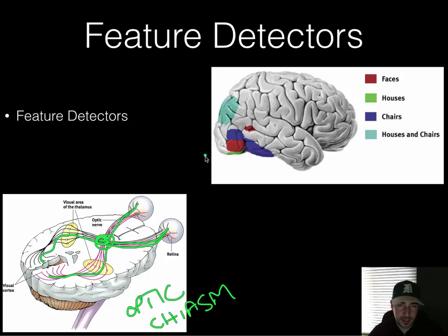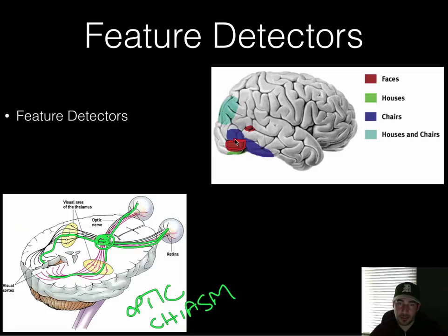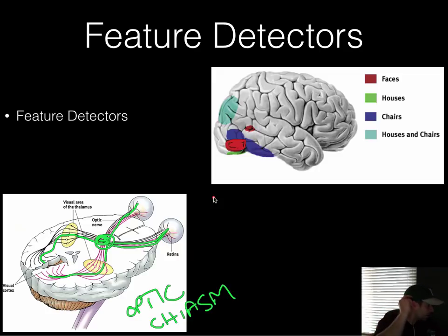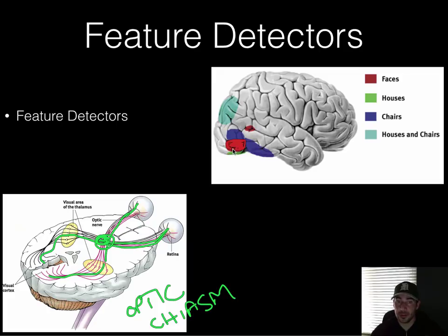We also have feature detectors — specialized parts of our brain for detecting different things. One especially important area is for faces, located in the occipital lobe on the right side, just above and behind the ear. This area is specifically dedicated to recognizing and distinguishing faces. If that part is damaged, a person will have trouble with face recognition. Different parts of the brain are dedicated to different things, like chairs, houses, and so on.